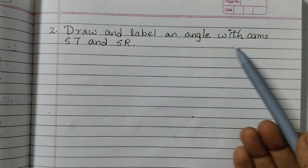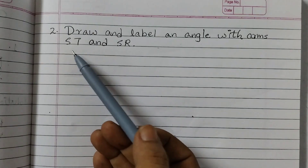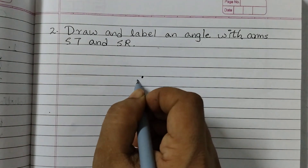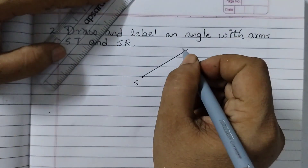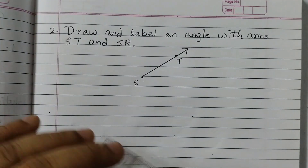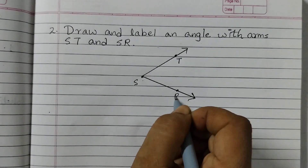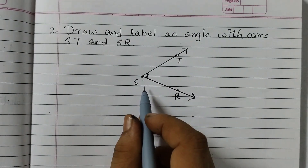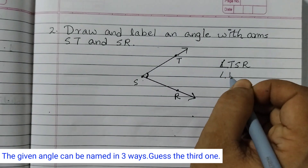Question number 2: draw and label an angle with arms ST and SR. We need to draw an angle where the arms or rays would be ST and SR. The common point is S, so take a point S. First draw ray ST — put an arrow showing it is a ray, with point T marked. Then draw ray SR with point R marked. These are the two arms ST and SR, and this is the angle formed. You can name it as angle TSR or angle RST.